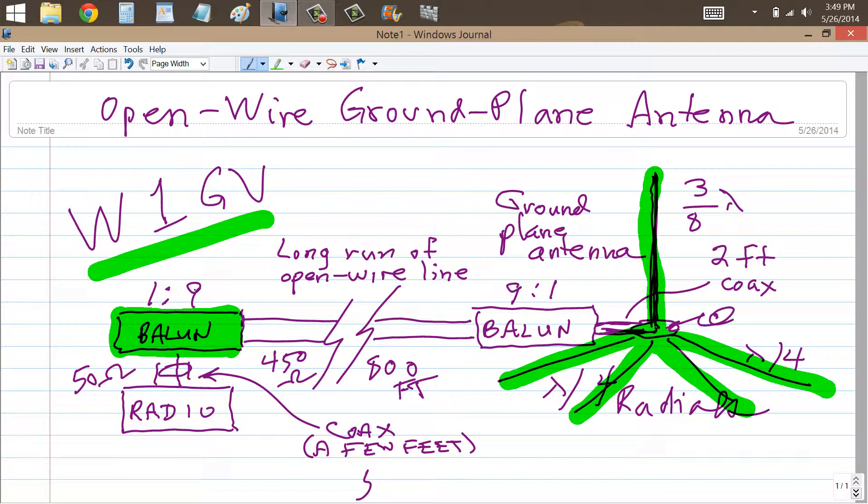One to nine balun here. That's connected in the traditional sense, where you have the 50 ohm side at your radio and the 450 ohm side at your transmission line. But instead of terminating this transmission line with something like a dipole or an otherwise balanced antenna,